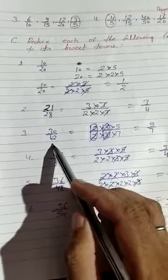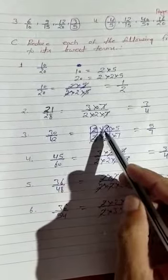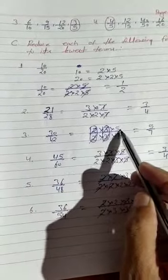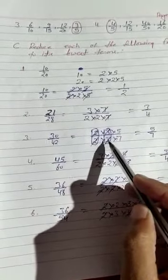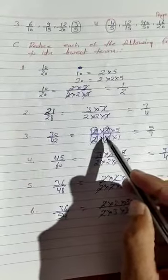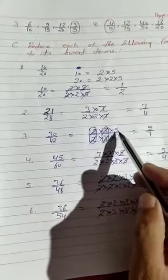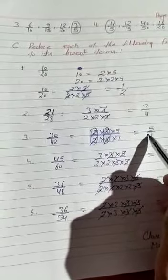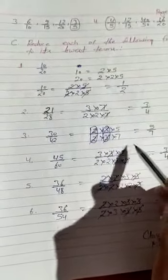30 upon 42: 2 multiplied by 3 times 5 is 30, and 2 times 3 times 7 is 42. 2 cancels, 3 cancels, giving 5 upon 7. 5 upon 7 is lowest term.